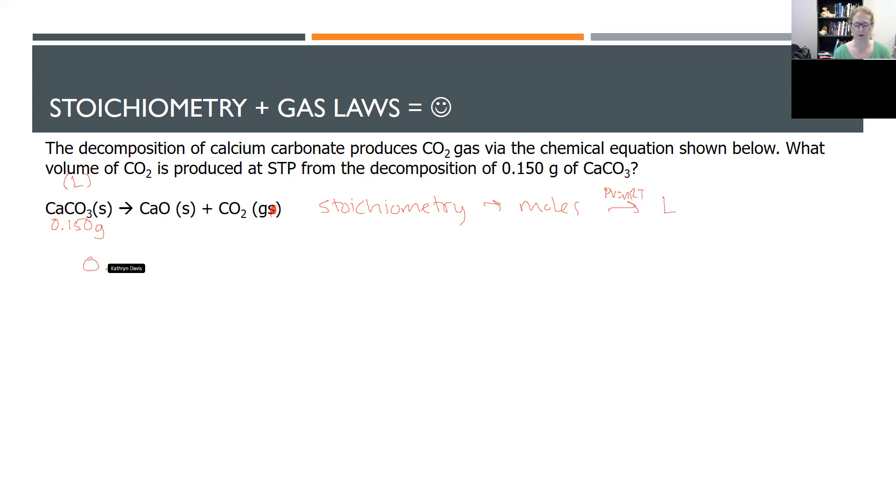Let's start with that 0.15 grams of calcium carbonate. And let's do a quick check. Let's make sure that our reaction is all balanced. I see one calcium and one calcium. I see one carbon and one carbon. I see one plus two, three oxygens and three oxygens. So we're good, right? Always check your balancing. Another thing I'm going to have to do is the molar mass, which is 100.08 grams of calcium carbonate in a mole.